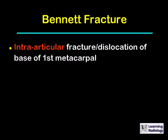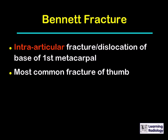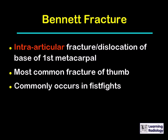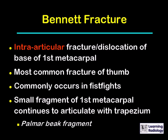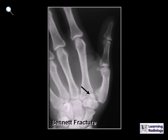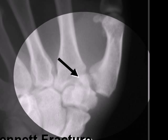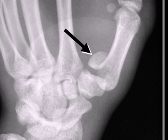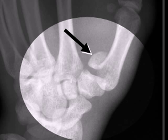A Bennett fracture is an intra-articular fracture and dislocation of the base of the first metacarpal — the thumb. It is the most common fracture of the thumb and commonly occurs in fist fights. A small fragment of the first metacarpal continues to articulate with the trapezium; it's called the palmar beak fragment. The black arrow points to this fragment while the remainder of the thumb is displaced laterally.